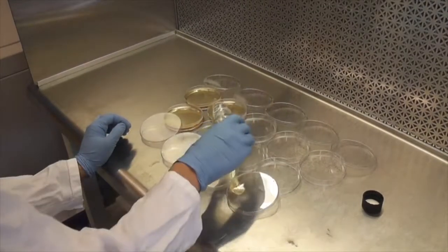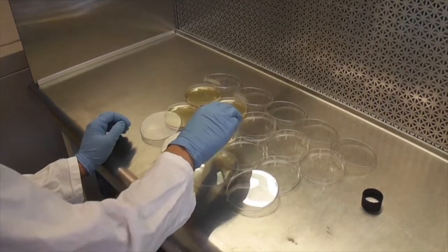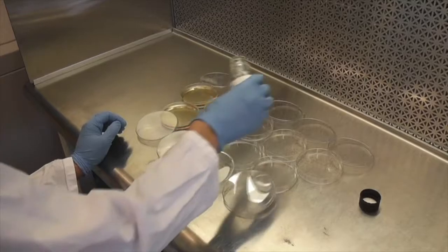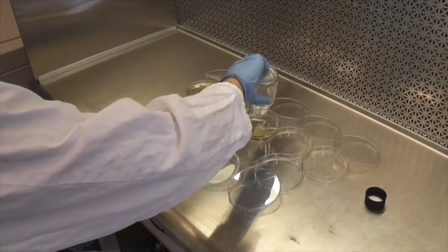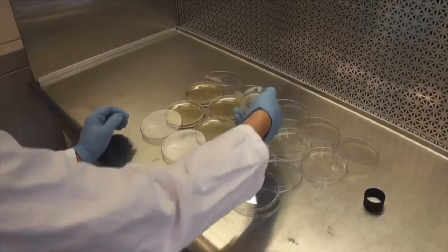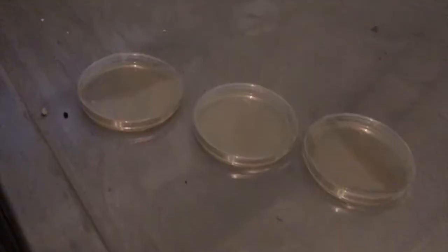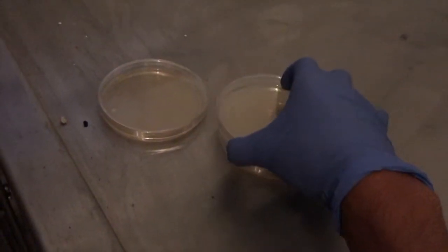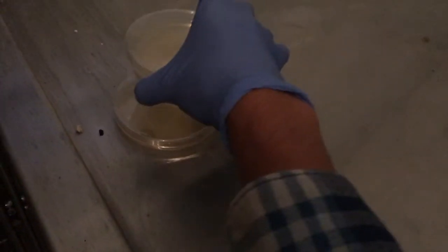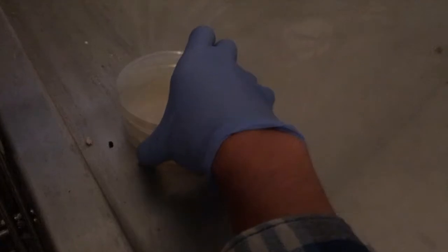If bubbles do form when working on a benchtop, they can be removed with a Bunsen burner or flamed inoculation loop. However, flaming plates supplemented with antibiotics risks inactivating the antibiotic. If pouring a large number of plates, pour in batches and stack plates that have already been poured. This will help prevent reaching over poured plates, thus reducing the risk of contamination.